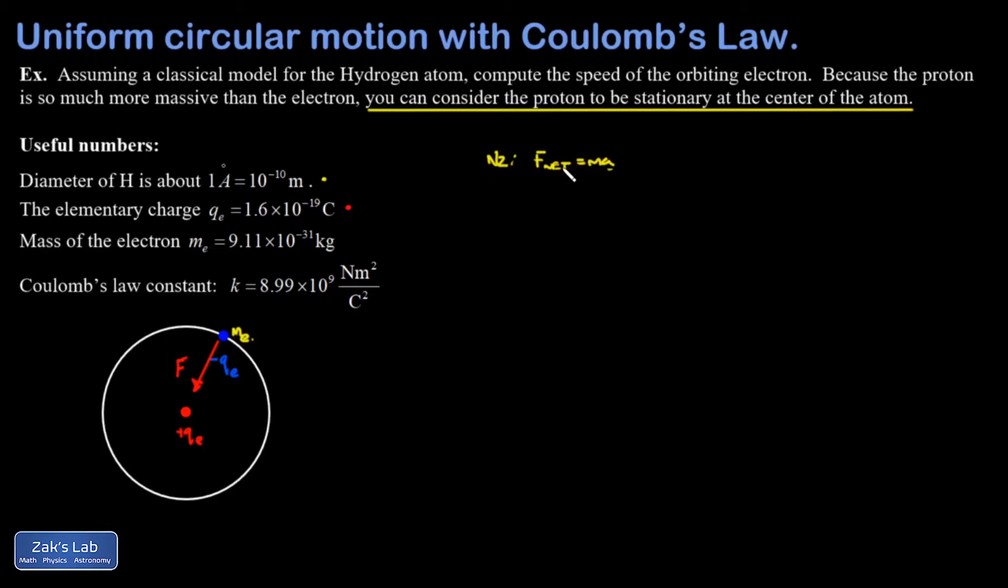So what's the net force on the electron? It's given by Coulomb's law. So k times the magnitude of each of the charges divided by the distance between them squared.